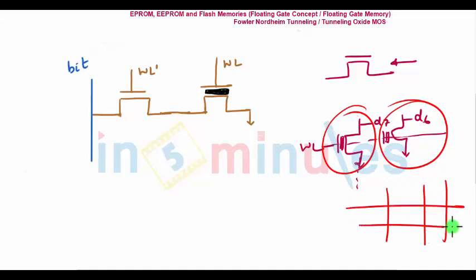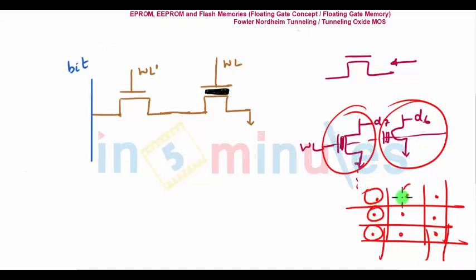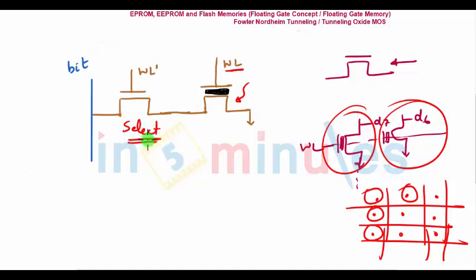To make it simple: in a cell of an array, each location had only one transistor. But in EEPROM, you have two transistors. This is my floating gate transistor, shown with the input as word line. It is connected in series to a transistor called a select transistor. This is connected to my bit line.